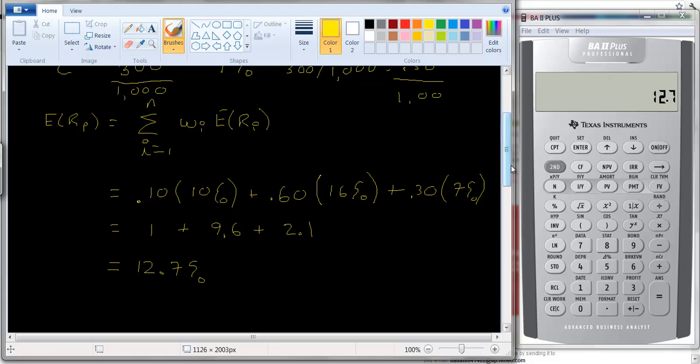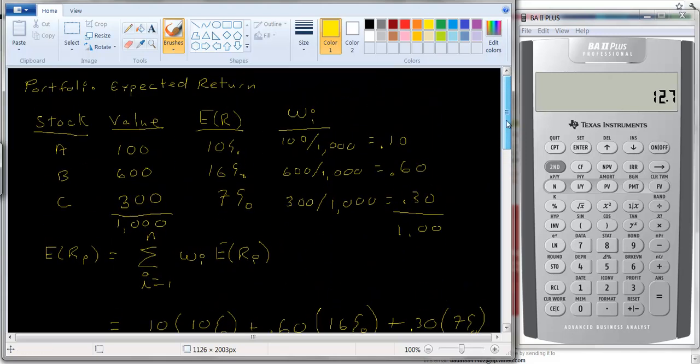And again let's ask ourselves does it make sense. Look at the numbers. It can't be lower than 7% or can it be higher than 16%. It is in fact in between those two so it's a reasonable number. And then you want to ask yourself how reasonable is it. Well the 10% isn't too important. It's a very small part of the portfolio.